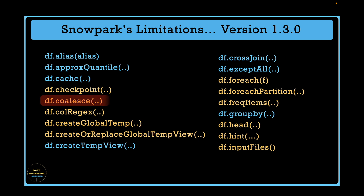For example, df.coalesce is a function that performs repartitioning in a Spark cluster, and Snowflake SQL does not have any equivalent operation — that's why this operation does not make any sense in Snowflake Snowpark's DataFrame API. On the other hand, df.cache is renamed in Snowpark and called df.cacheResult. There is a dedicated playlist that talks about each Snowpark DataFrame operation with examples — refer to the description section below for the link.